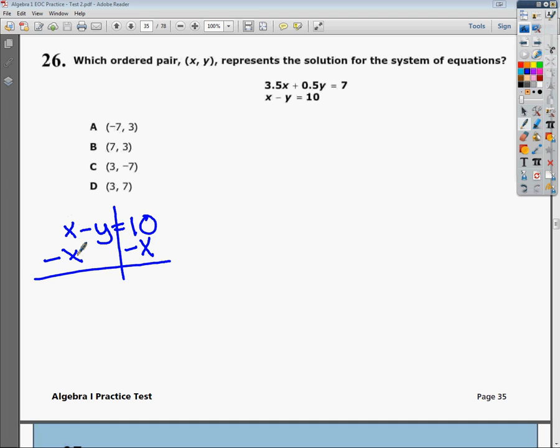Draw your line. Get rid of your x, since it's a subtraction relationship, I need to subtract x. These cancel. Negative x and 10 cannot combine, so I'm just going to bring them down. Then I need to get y by itself again, which means divide by negative 1. So y equals x minus 10. That's the first one.